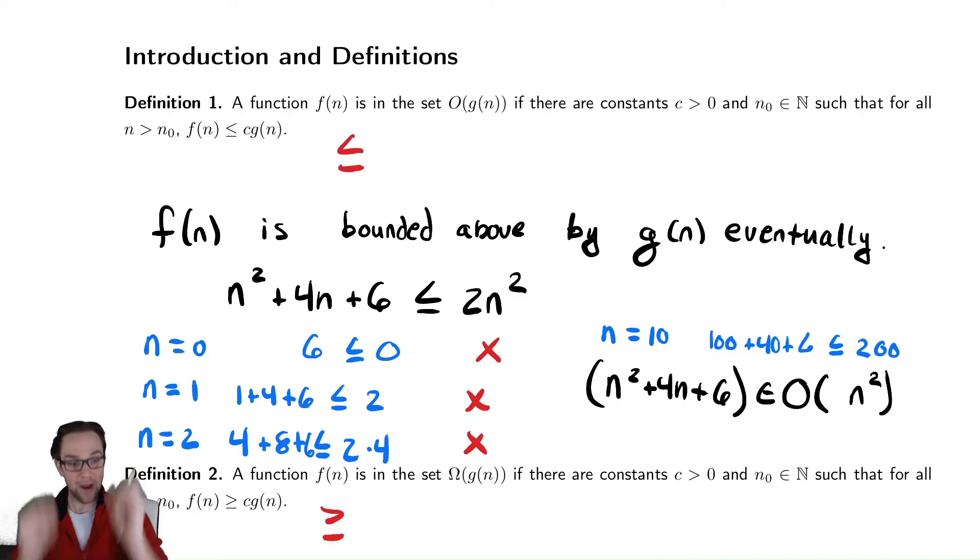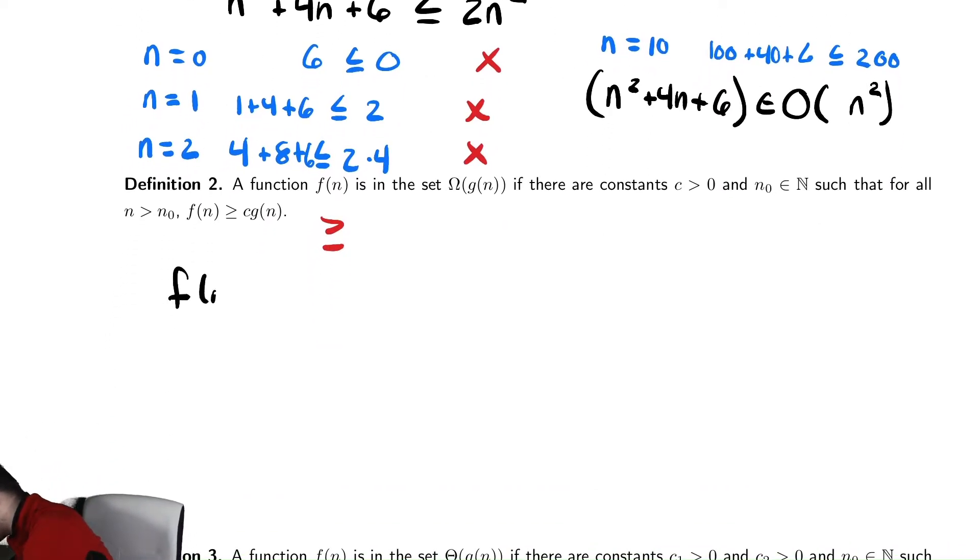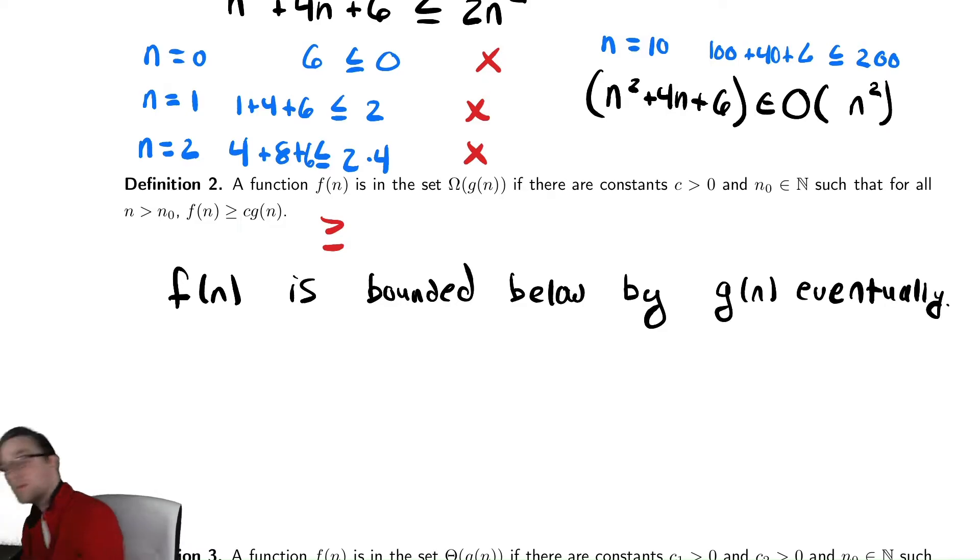Our next definition is very similar. It's the exact same idea, but we're bounded below. So, f(n) is bounded below by g(n), eventually. All of the details are the same. The only difference between big O and big omega is that where we had a less than or equal to before, we have a greater than or equal to here.